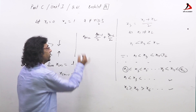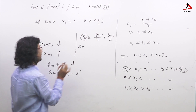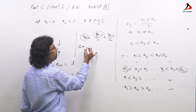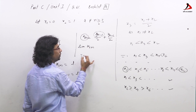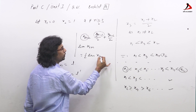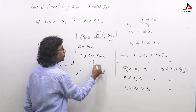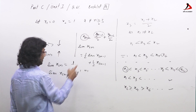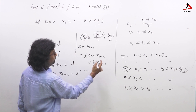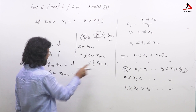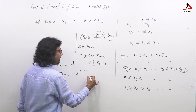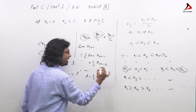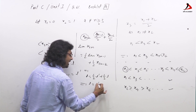Given x_{2n} = (x_{2n−1})/2 + (x_{2n−2})/2, taking the limit on both sides: lim x_{2n} = (1/2) lim x_{2n−1} + (1/2) lim x_{2n−2}. This gives l = (1/2)l′ + (1/2)l, which simplifies to l = l′. So both subsequences converge to the same limit.